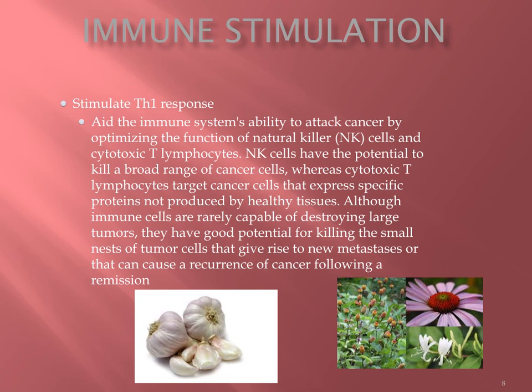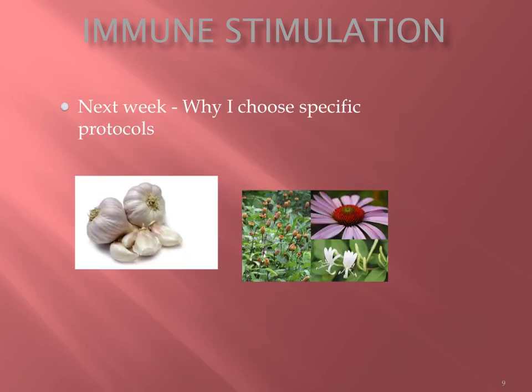We need to stimulate a TH1 response, so if you're going to do chemotherapy, we really need to stimulate a TH1 response alongside it. That's some of the therapies we'll get into in the next few presentations. Anything that aids an immune response — like echinacea and garlic — that increases T lymphocytes, natural killer cells, macrophages, and cytotoxic cells is all part of the TH1 response. Next week we'll go into why I choose specific protocols and which ones I like best.